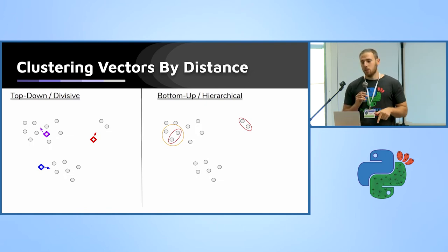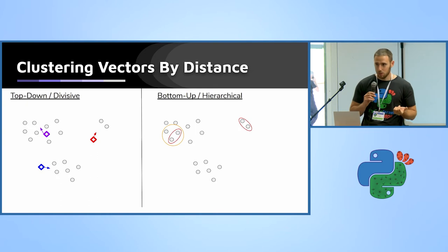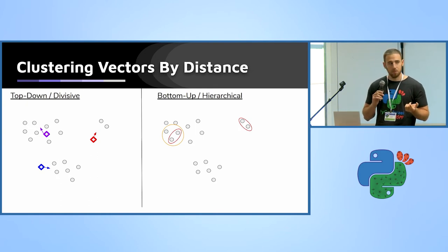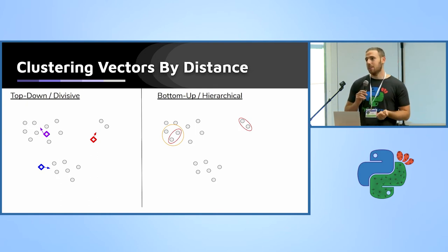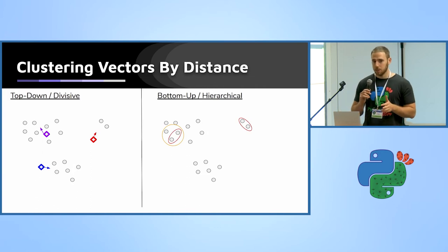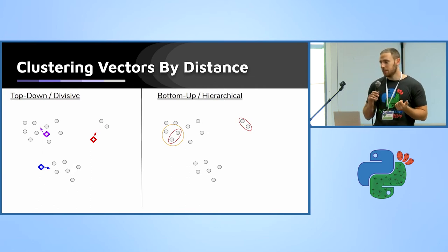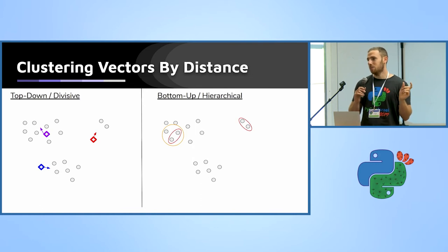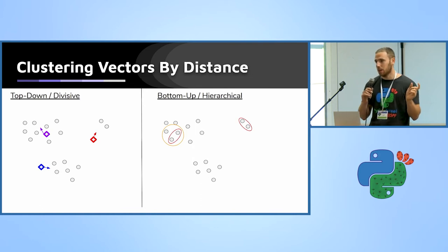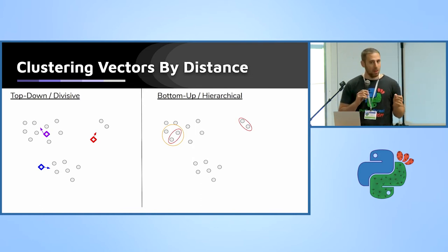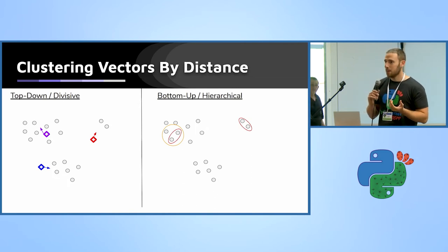And for this use case we applied the bottom-up approach, also known as the hierarchical approach, in which we start with N clusters, N being the number of data points. And at each phase we unite two data points that are closest together. And our stopping criteria would be the minimal distance that we consider two points to have the same cluster.